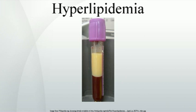Combined hyperlipidemia, also known as multiple-type hyperlipoproteinemia, is a commonly occurring form of hypercholesterolemia characterized by increased LDL and triglyceride concentrations, often accompanied by decreased HDL. On lipoprotein electrophoresis it shows as hyperlipoproteinemia type IIB. It is the most common inherited lipid disorder, occurring in approximately 1 in 200 persons. Almost 1 in 5 individuals who develop coronary heart disease before age 60 will have this disorder. The elevated triglyceride levels are generally due to an increase in VLDL, a class of lipoprotein prone to cause atherosclerosis.